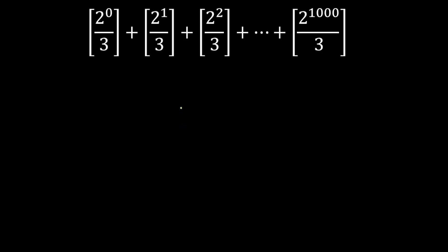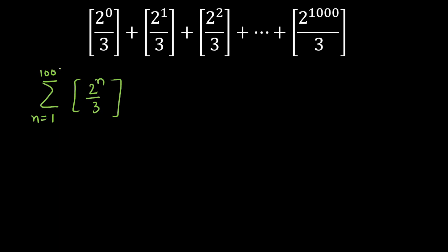The first thing I am going to do is make this series into compact format — that is, using summation. I can write this as GIF of powers of 2 divided by 3, where the powers are even and odd collectively, and n is varying from 1 to 1000, as you can see.